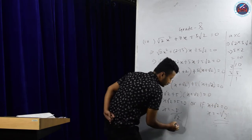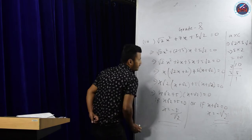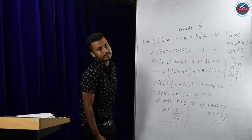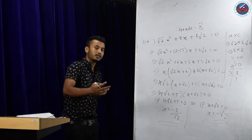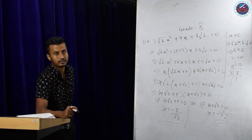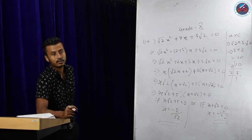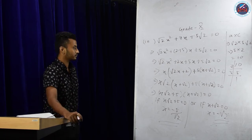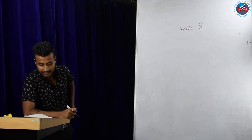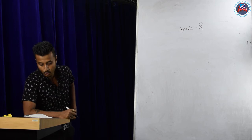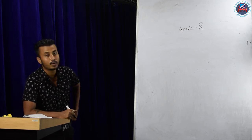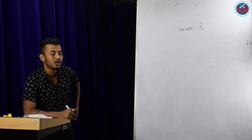I hope you understood this easily, because you have already done this method in your previous classes. Now, question number 3: find the numbers whose sum is 27 and product is 182. There are two numbers in the question — when you add them you get 27, and when you multiply them you get 182.